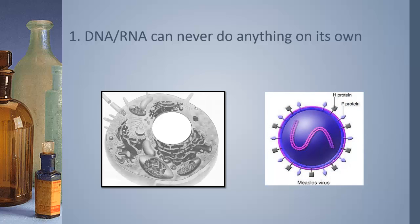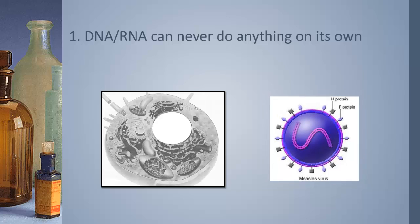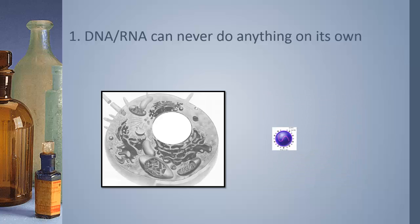For instance, a virus, this is a measles virus, but it's basically the same. It's just DNA or RNA in a protein coat. It cannot do anything on its own. Though it has DNA or RNA, it needs the cell to do things. So it has to infiltrate a cell in order to use the machinery of that cell.